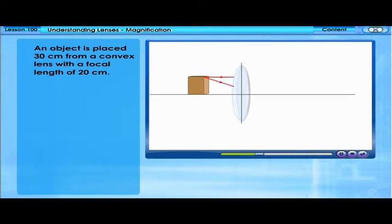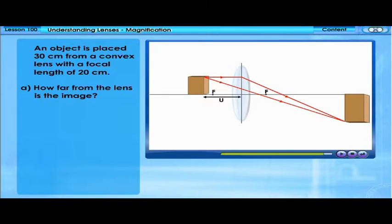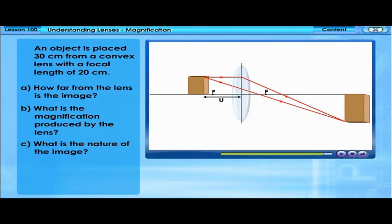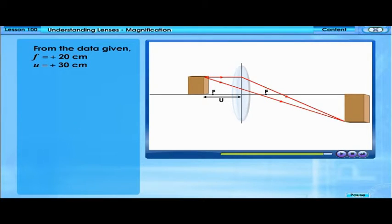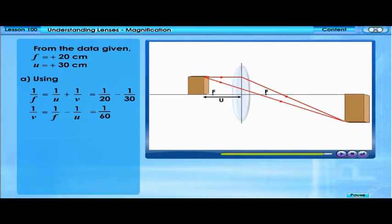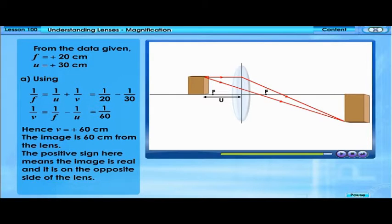An object is placed 30 centimetres from a convex lens of focal length 20 centimetres. How far from the lens is the image? From the data given, F equals 20 centimetres and U equals 30 centimetres. Using the lens formula and rewriting it, 1 over V equals 1 over 60. Hence V is 60 centimetres. The image is 60 centimetres from the lens. The positive sign means the image is real and on the opposite side of the lens.